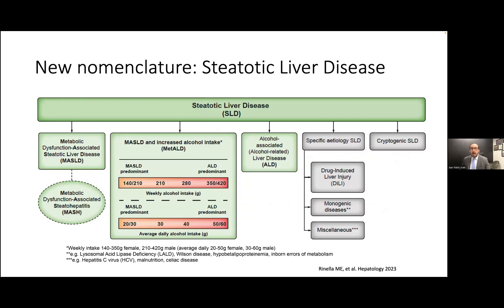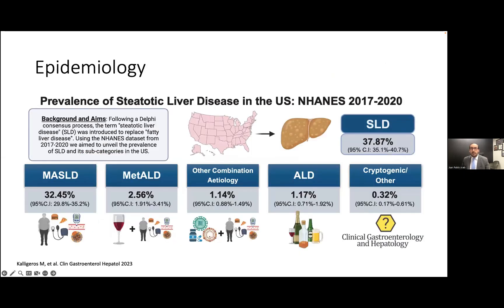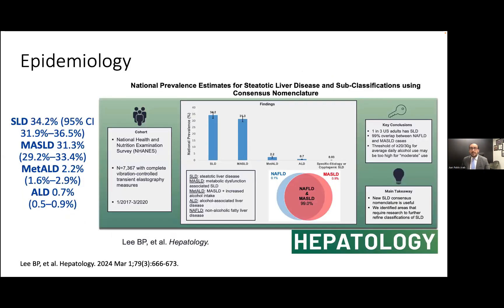Dr. Rinella already explained the spectrum of steatotic liver disease. That is what you are going to find when a patient comes to your clinic with an ultrasound showing steatosis — you need to define where in the spectrum this patient falls, and I'm going to focus in the middle, in the MET-ALD category. Using data from the U.S. National Care Survey, close to 37–38% of the population is going to have steatotic liver disease: 32% MASLD, 2.5% MET-ALD, and 1% ALD. So we are still talking about a very significant proportion of the population.